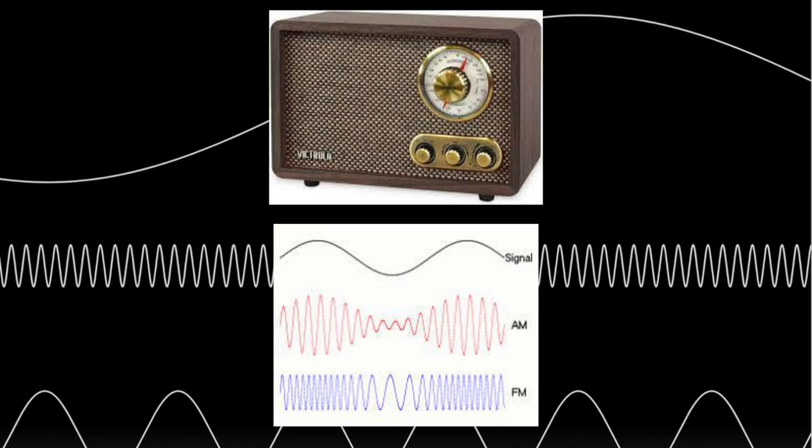AM radio waves all use the same frequency but varying amplitude, and FM radio waves use the same amplitude but varying frequency.